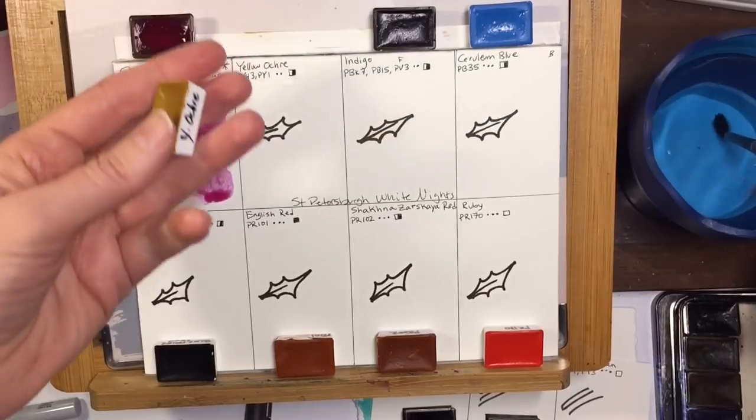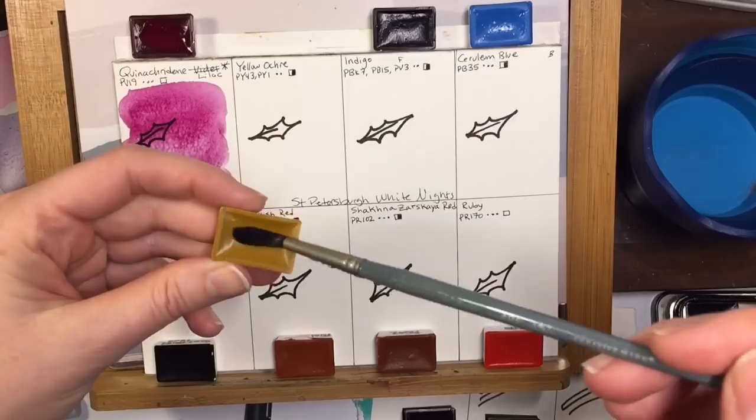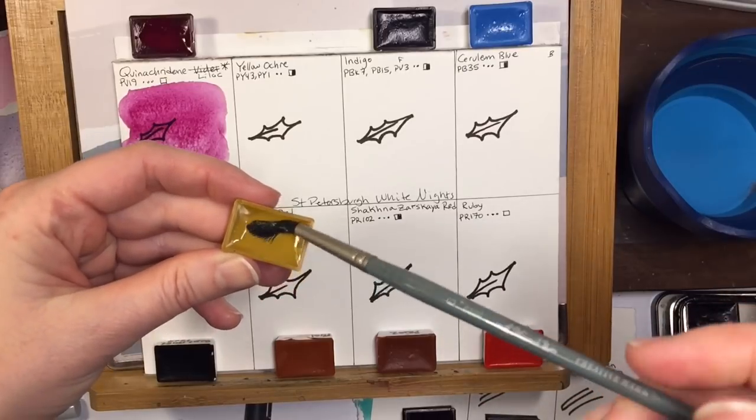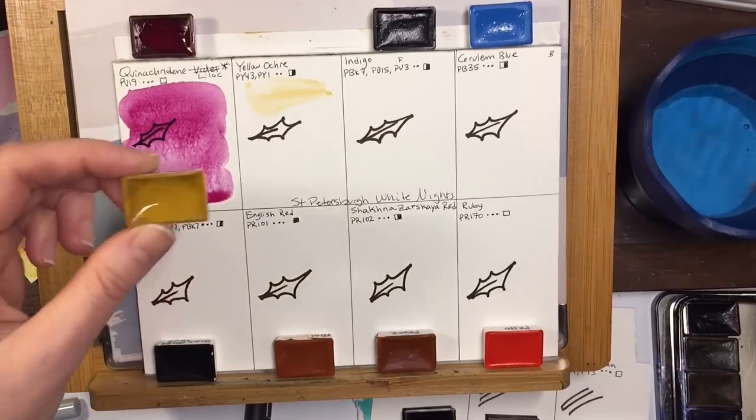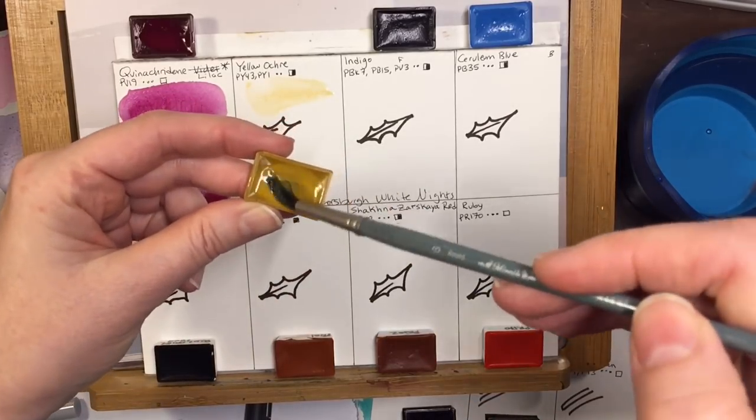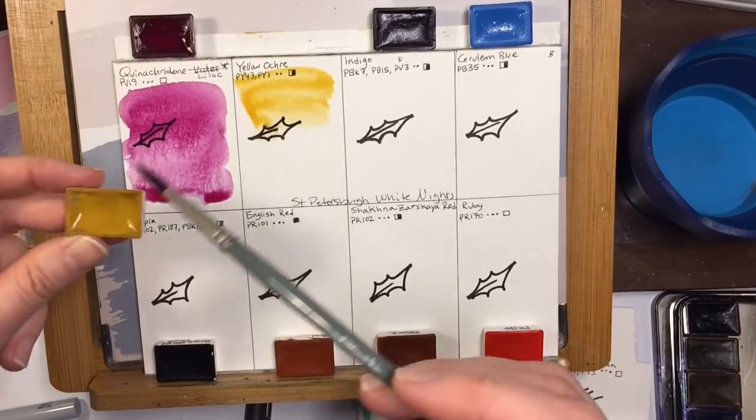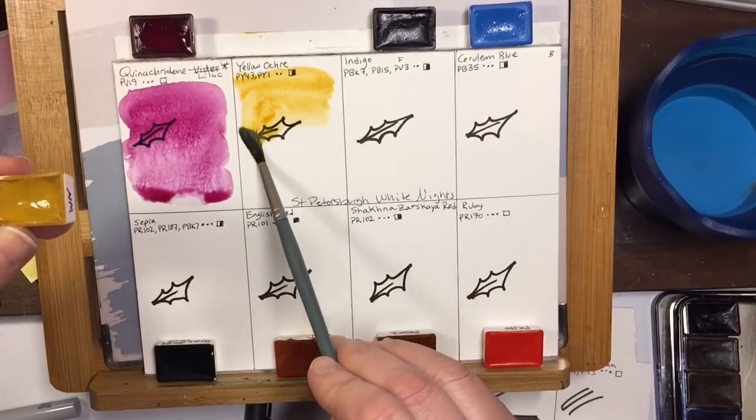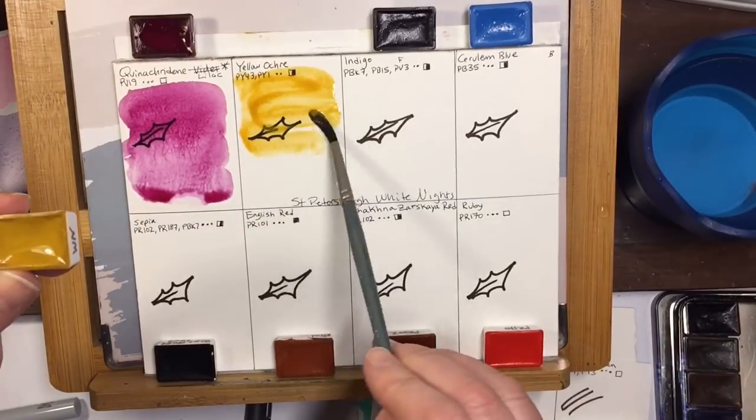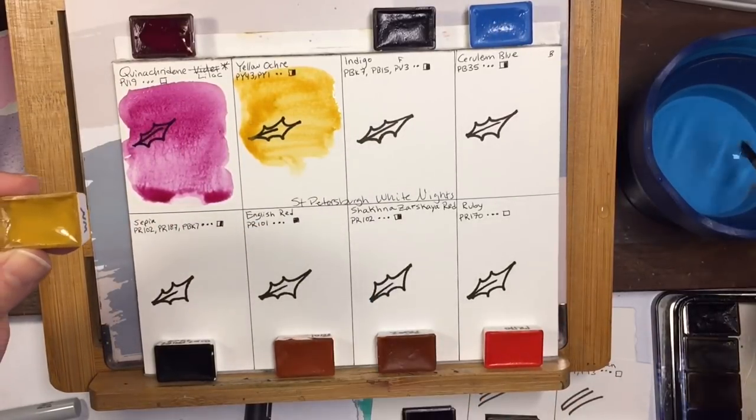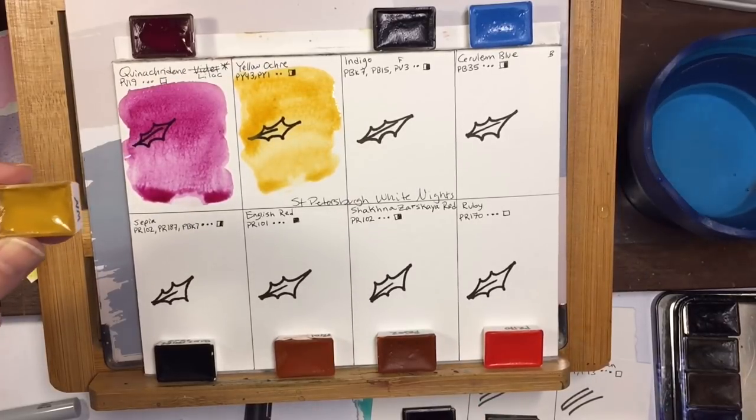This yellow ochre is one that I'm curious about. They put a PY1 which is a yellow pigment that's not lightfast in there. I don't think they needed to do that but we'll see why when we swatch it out. Maybe to give it a bit more transparency. That's what I'm thinking. It's pretty, and it will do.